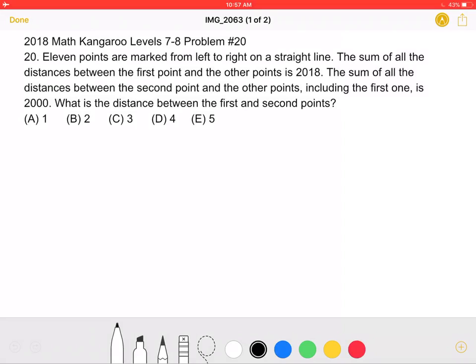11 points are marked from left to right on a straight line. The sum of all the distances between the first point and the other points is 2018. The sum of all the distances between the second point and the other points, including the first one, is 2000.